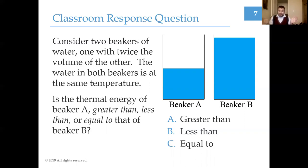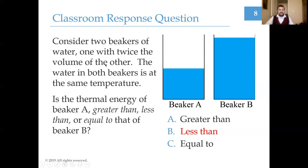Thermal energy is the combination of all vibrations (kinetic energy) plus the potential energy stored in chemical bonds. The temperature is the same, which means the kinetic energy is the same, but there's more stuff in beaker B — more molecules, more bonds. Therefore there is more thermal energy in system B compared to system A, even though the temperatures are the same, because there is more potential energy in system B. The kinetic energies would be the same.